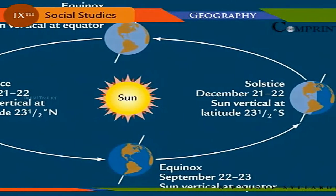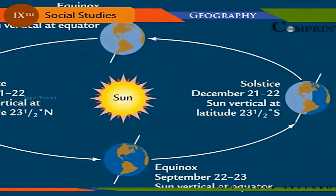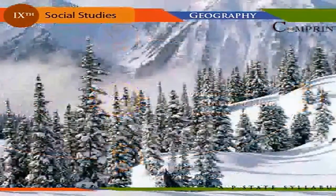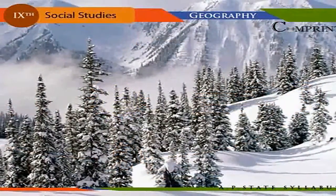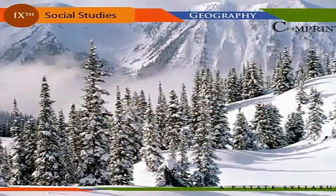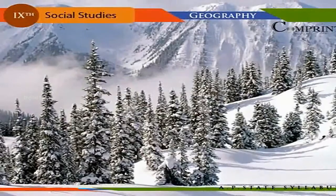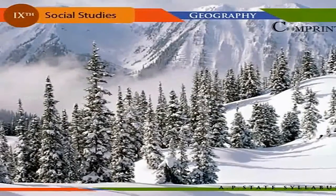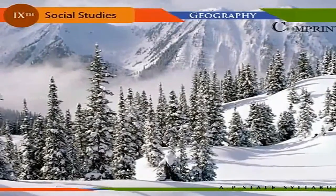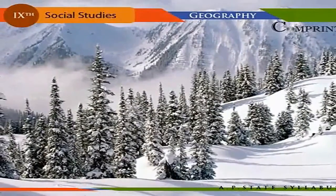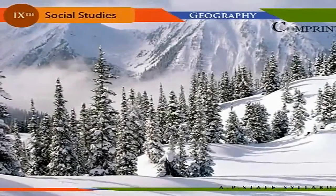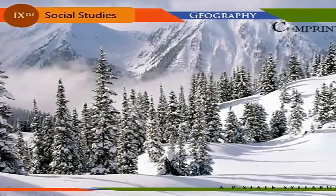Our planet rotates on an inclined axis, which is responsible for the seasons. The days are longer during summer and shorter during winter as we move away from the equator, and so is insolation — greater during summer and lesser during winter.